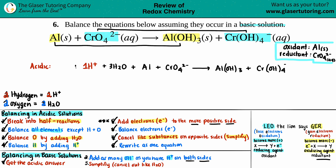Since I only have one H⁺, I add one OH⁻ — but I have to be fair and add it to both sides. So one OH⁻ goes on the left side and one OH⁻ goes on the right side.